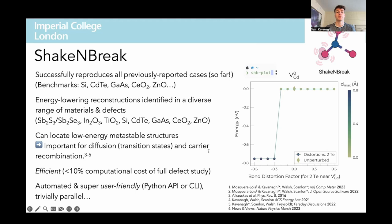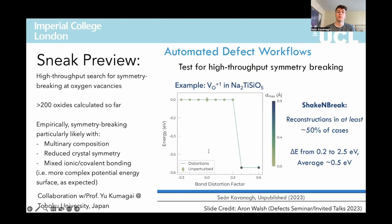As a brief sneak preview, I'll mention our recent collaboration with Professor Yu Kumagai in Japan, applying Shake and Break in a high-throughput search for symmetry breaking at oxygen vacancies in several hundred oxides. Our method identifies energy-lowering reconstructions in over 50% of cases, and we note that this tends to be particularly likely when you have multinary composition, reduced crystal symmetry, or mixed ionic-covalent bonding — all of which contribute to greater complexity on the potential energy surface.